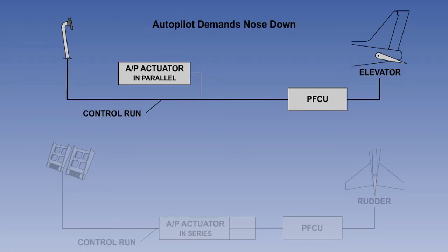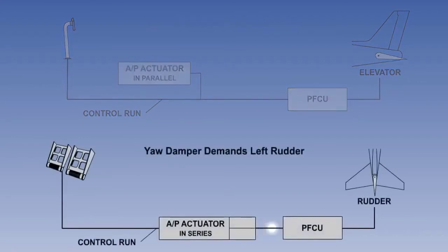Most aircraft with traditional mechanical controls will have their pitch and roll channels connected in parallel, and their yaw channel connected in series. The yaw channel is likely to incorporate a yaw damper, which will continually counteract any Dutch roll tendency. This will be fully explained in another lesson. The series connection of the rudder will prevent continual small movements of the rudder pedals. Aircraft with fly-by-wire control systems have different arrangements, dependent upon the manufacturer.